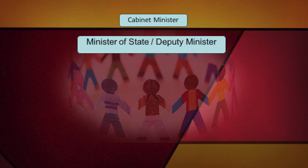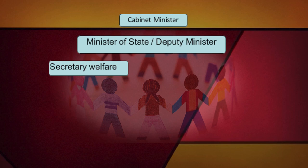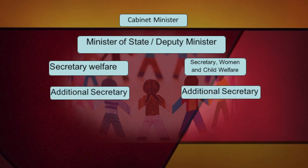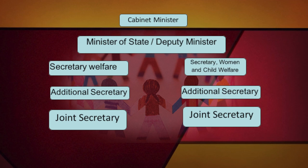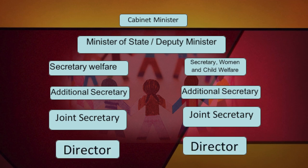Administrative Organization: The Ministry of Social Welfare at state level is headed by a Cabinet Minister assisted by a Minister of State or Deputy Minister. The Department of Social Welfare at state level is headed by the Secretary of Social Welfare, who is assisted by an Additional Secretary. The Department of Welfare has 7 wings catering to various aspects of welfare, of which 5 wings are headed by a Joint Secretary and others are under the charge of the Financial Advisor and a Director.